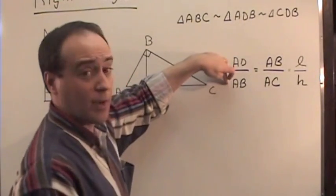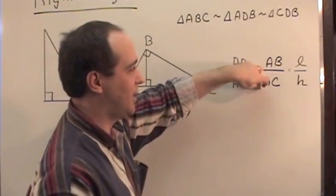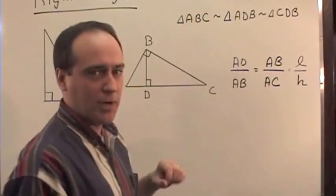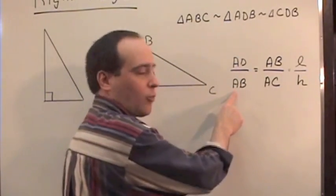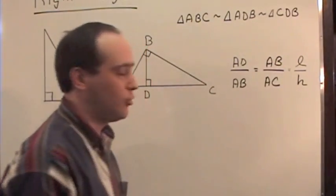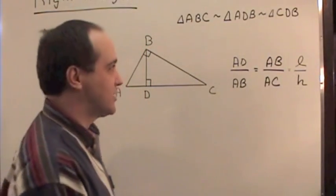But notice AD divided by AB, and then AB divided by AC. They call this a geometric mean when you have what's the denominator for one proportion side is the numerator for the other proportion side.